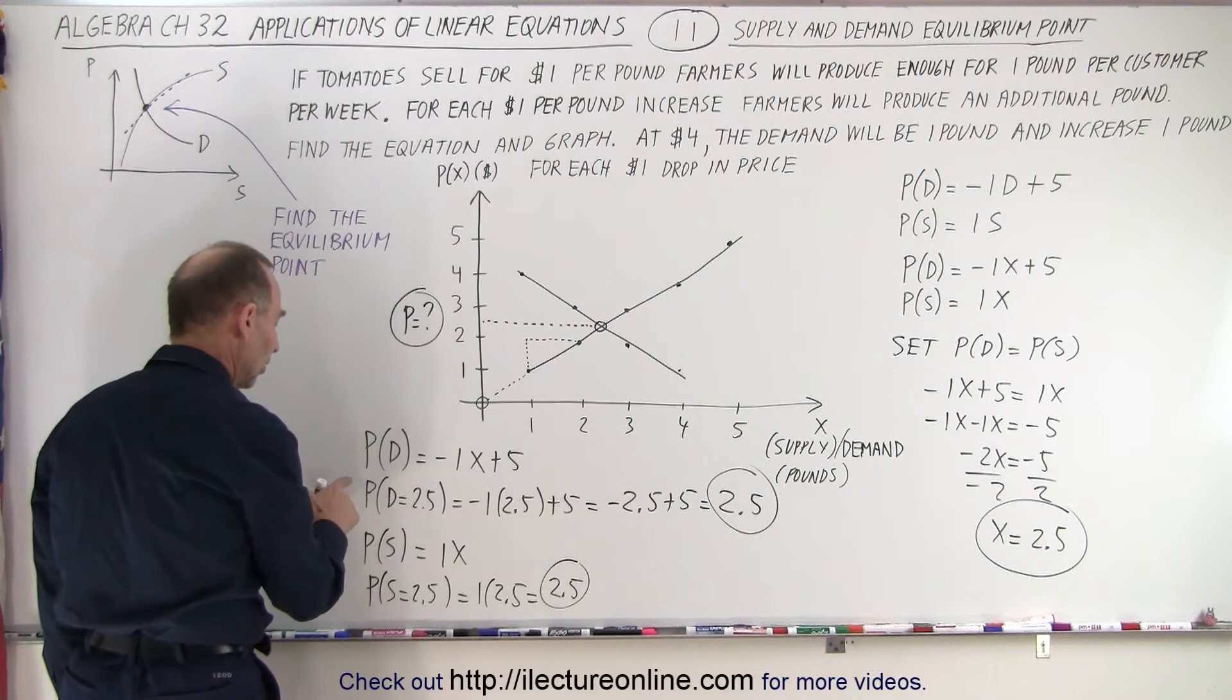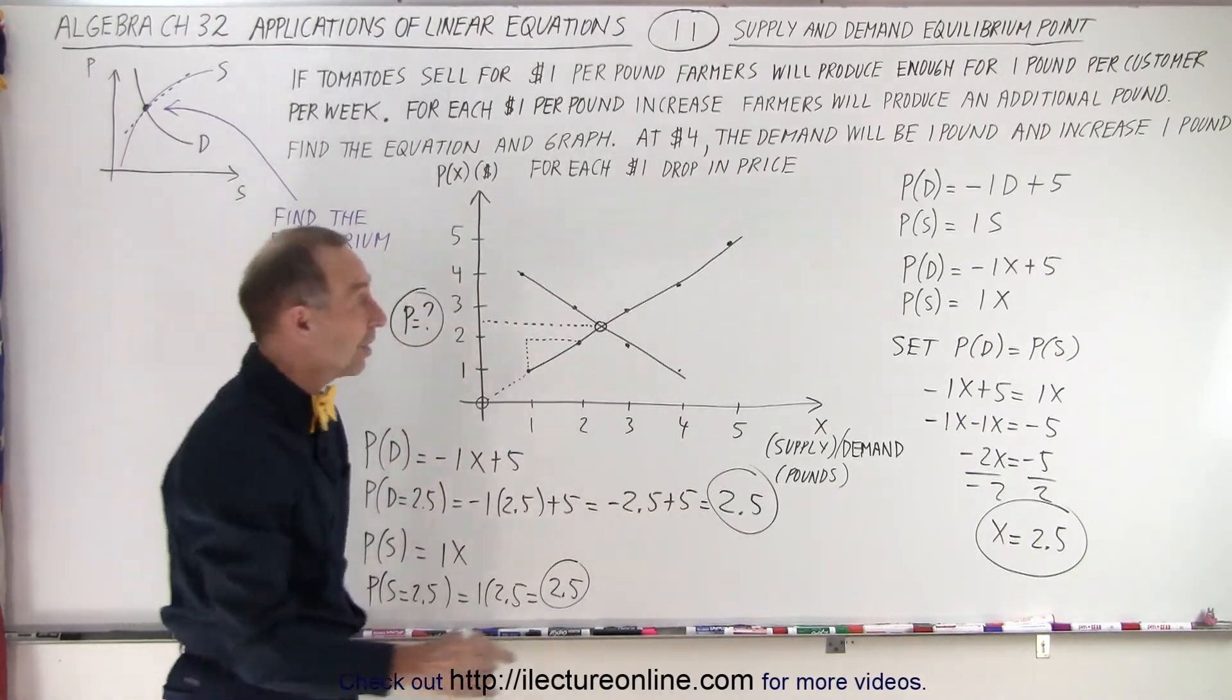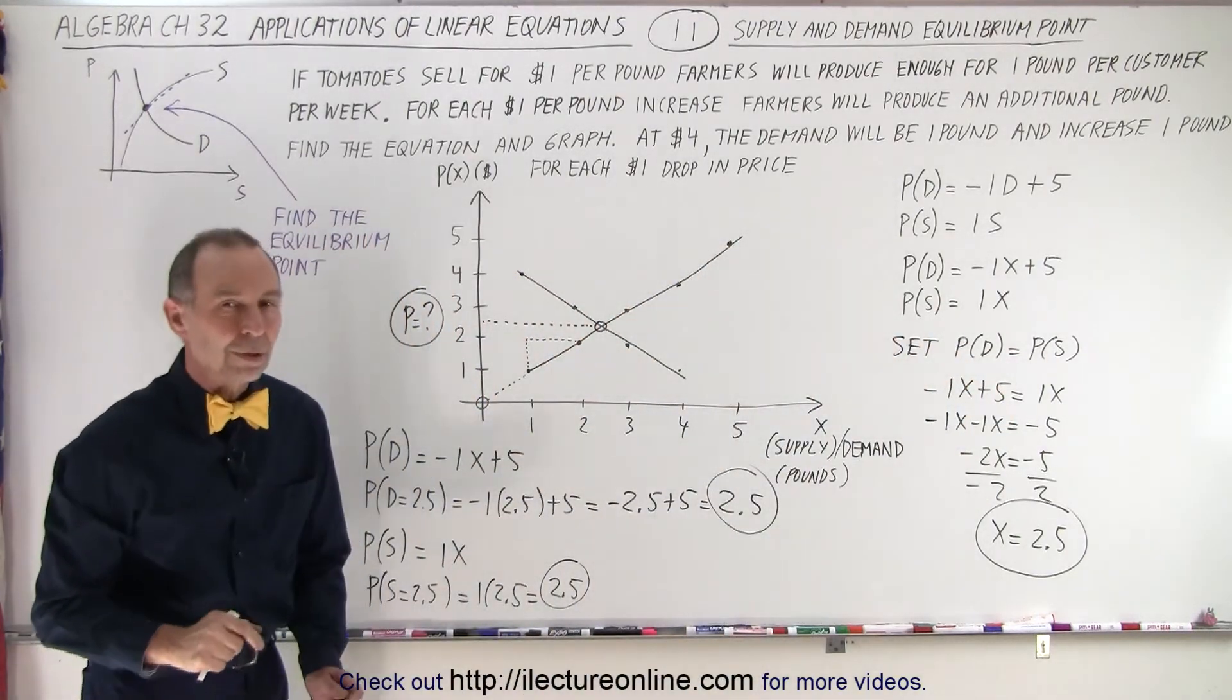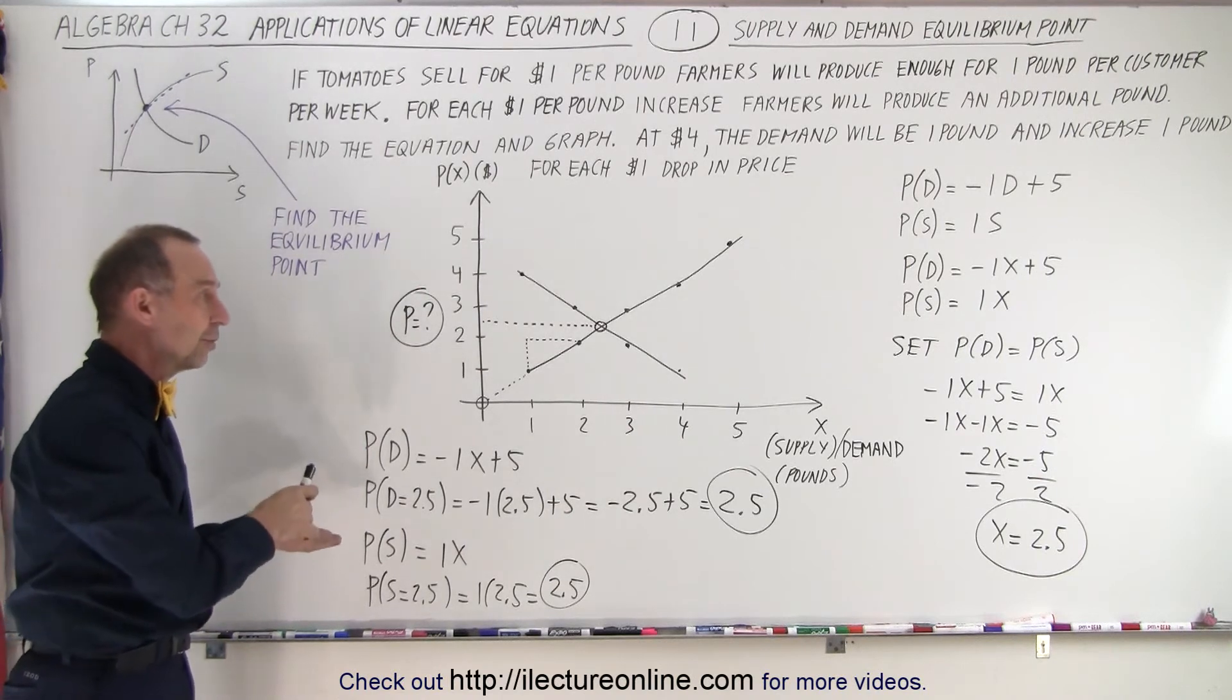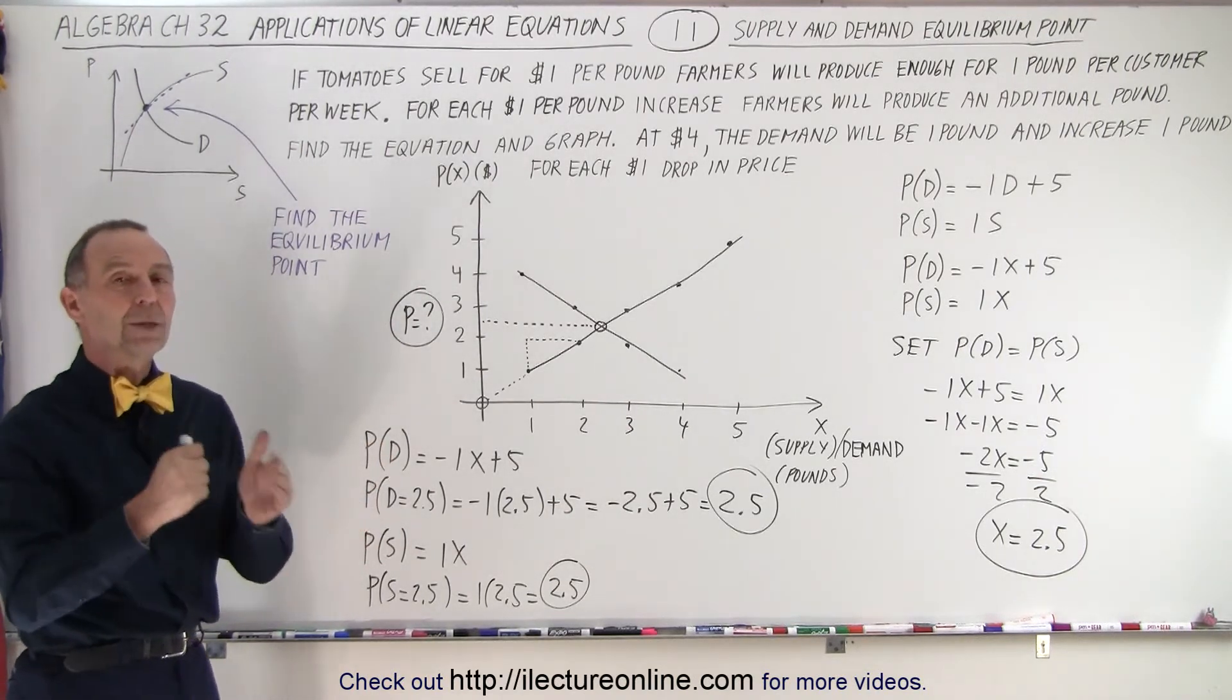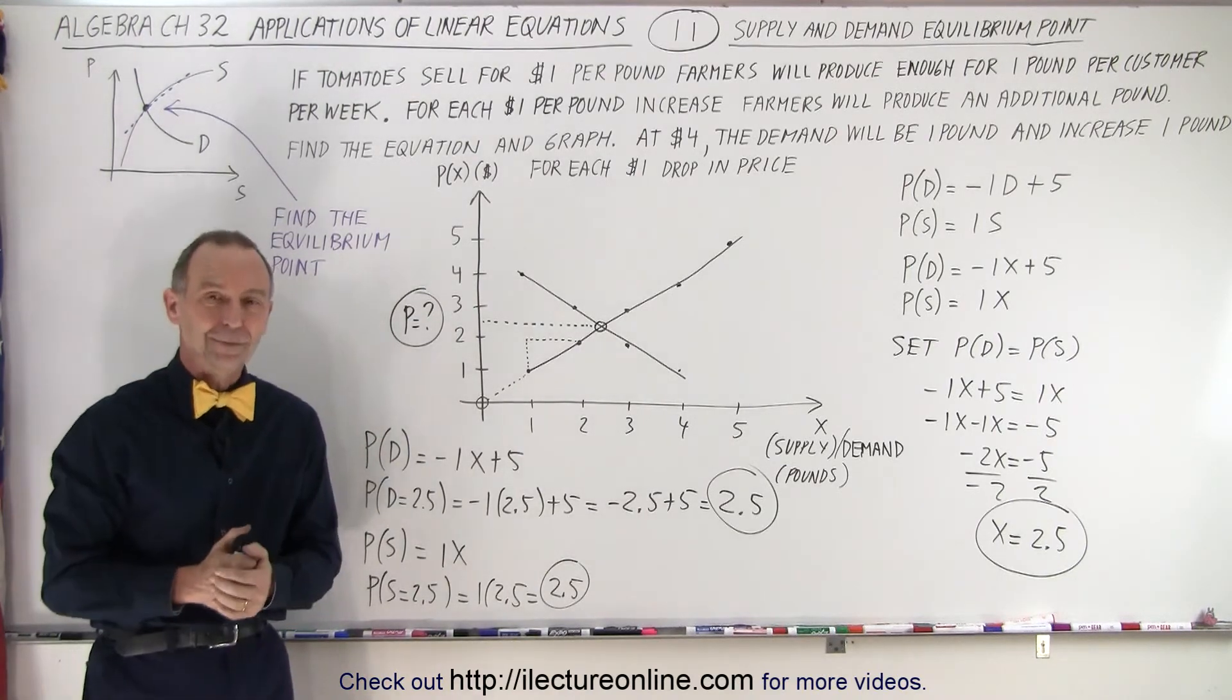So again, you can see that the price for either demand or the supply equation better be the same because here we set them equal to each other to find the equilibrium point. That is how we find the equilibrium point, by setting the price for the demand equal to the price for the supply to find out what that equilibrium point would be. And that is how that's done.